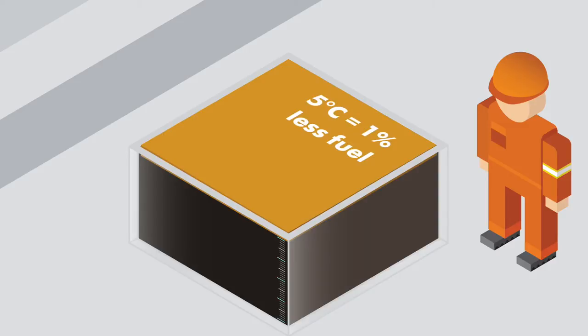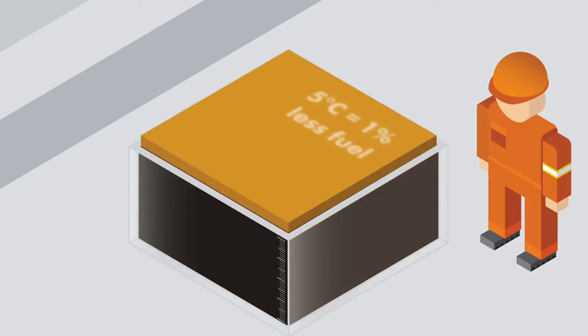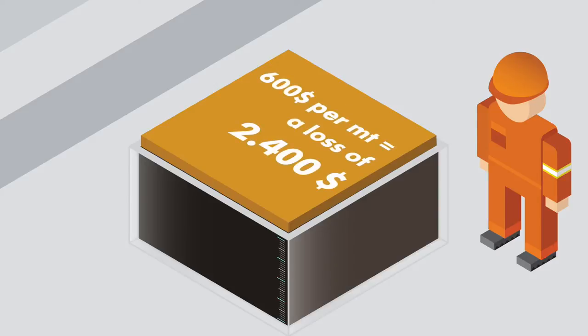A 5 degree change means you get 1% less fuel oil. 1% of 400 metric tons of heavy fuel oil equals 4 metric tons. At $600 per metric ton, this equals a loss of $2,400.